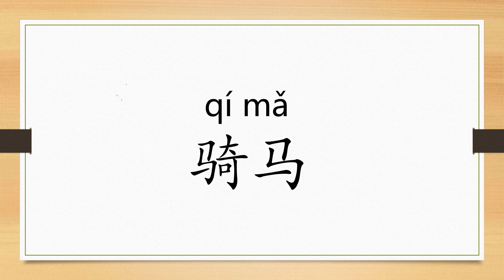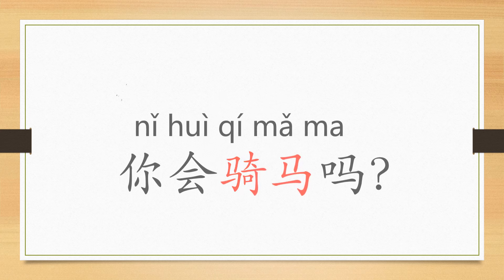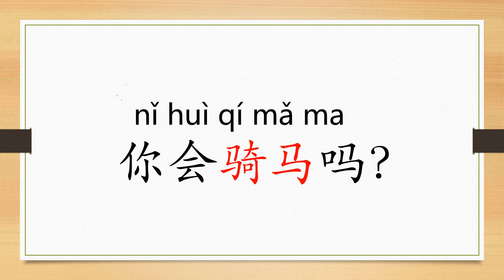骑马 (qí mǎ) — 马 means horse, so 骑马 means to ride a horse. 你会骑马吗？— Can you ride a horse?